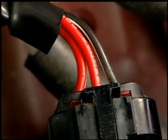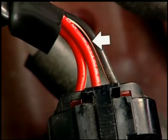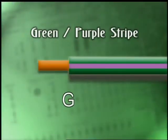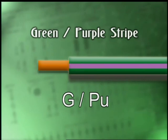Because of the number of circuits in a car, the limited number of primary colors is added to by the use of stripes on the wires. Where stripes are used, the main color of the wire is shown first, followed by a slash and the color symbol for the stripe. For example, a green wire with a purple stripe would be shown as G slash PU.